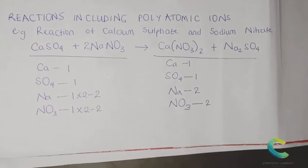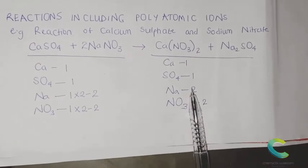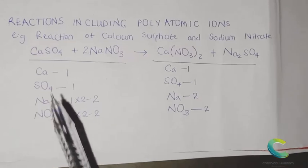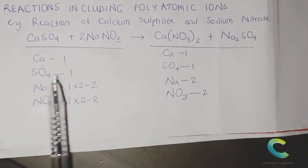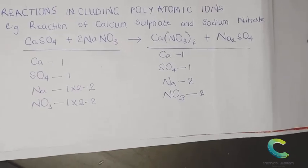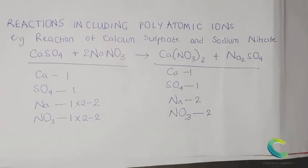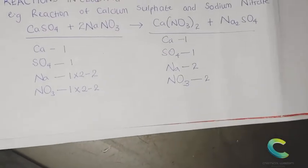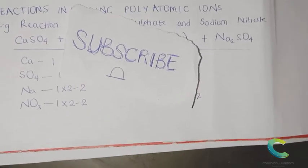These three major steps can help you balance any chemical equation. Step one: list out the atoms. Step two: compare both sides to find differences. Step three: introduce and manipulate coefficients on both sides of the equation. If you like this video, click the like button and subscribe, and click the bell icon so you don't miss our future videos.